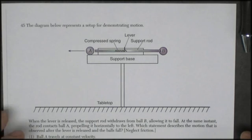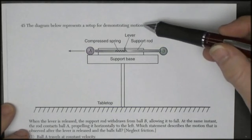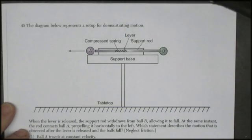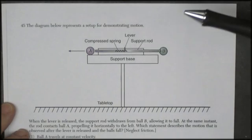This is the June 2012 exam, page 7. We're on question 45, which talks about a setup for demonstrating motion. There's a support base, a compressed spring, a rod and a lever.